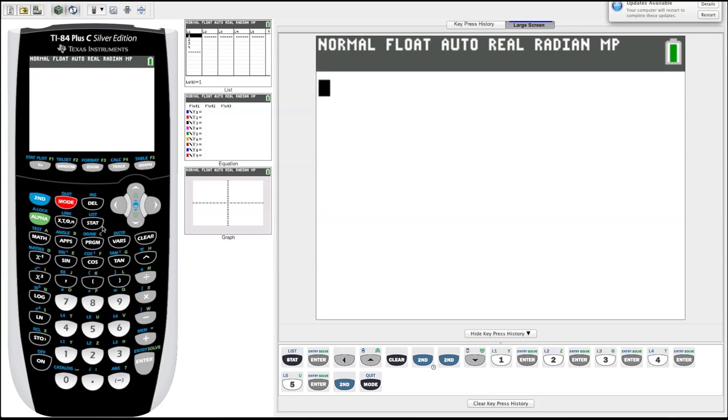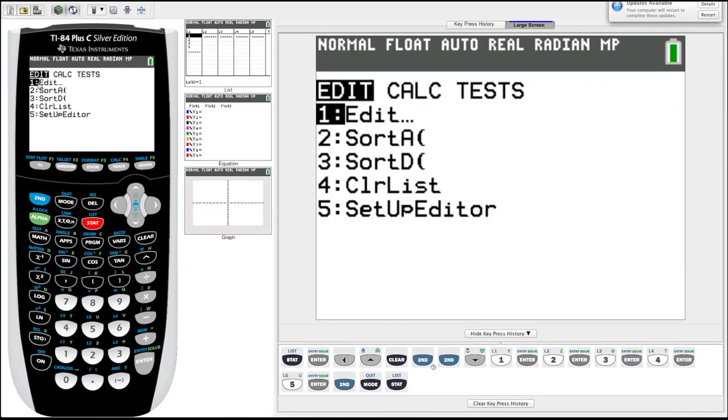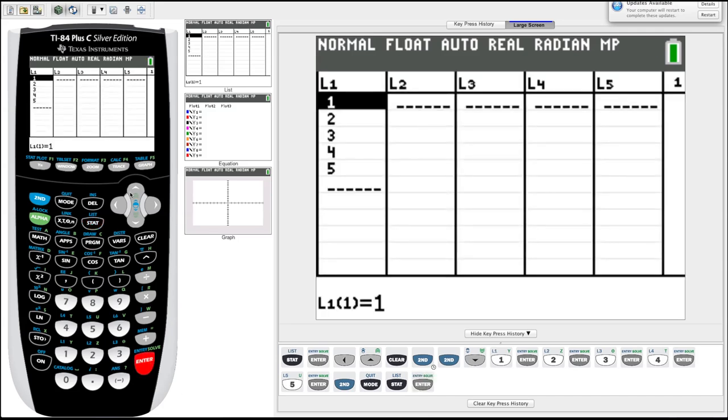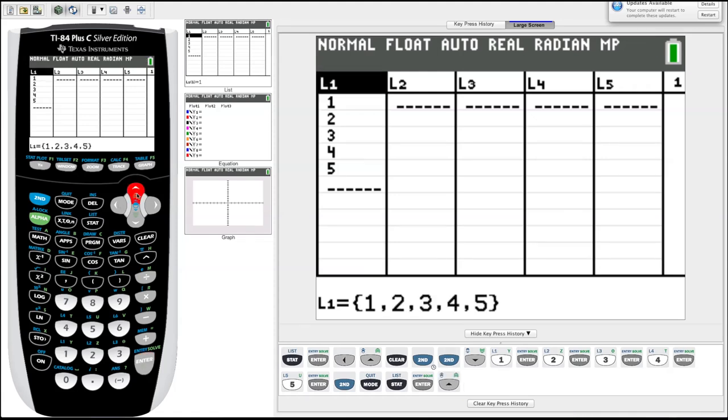So we go over to our calculator, we're going to hit stat, pick one, go to edit, and enter. Looks like we have some old data in our list, so we'll show you how to clear that. You just need to arrow up to list one, hit clear, hit enter again, and it'll clear the list.